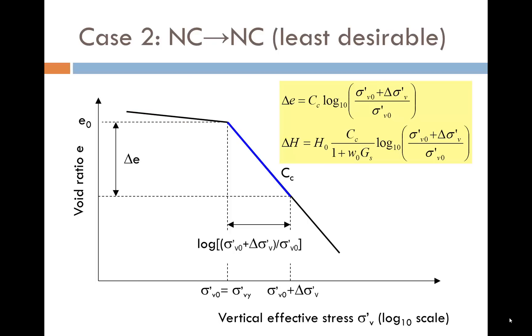The second case is when the soil is normally consolidated before construction and obviously still normally consolidated by the end. The formulation is similar to before, except we are now using the Cc slope, which is typically 5 to 10 times higher than Cs.